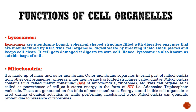Mitochondria is also known as the powerhouse of the cell. It is made up of inner and outer membranes. The outer membrane separates the internal part of the mitochondria from other cell organelles, whereas the inner membrane has folded structures called cristae.